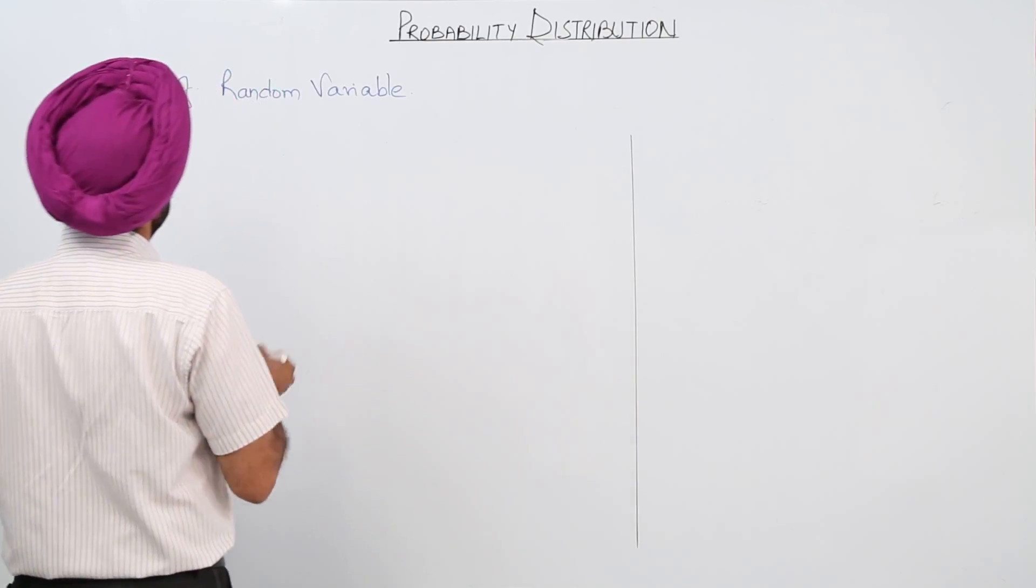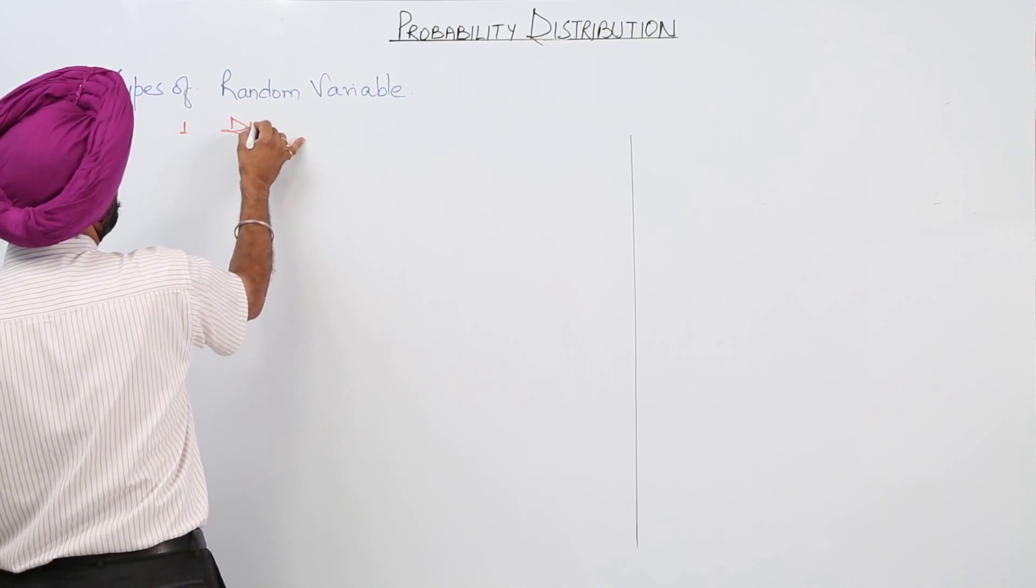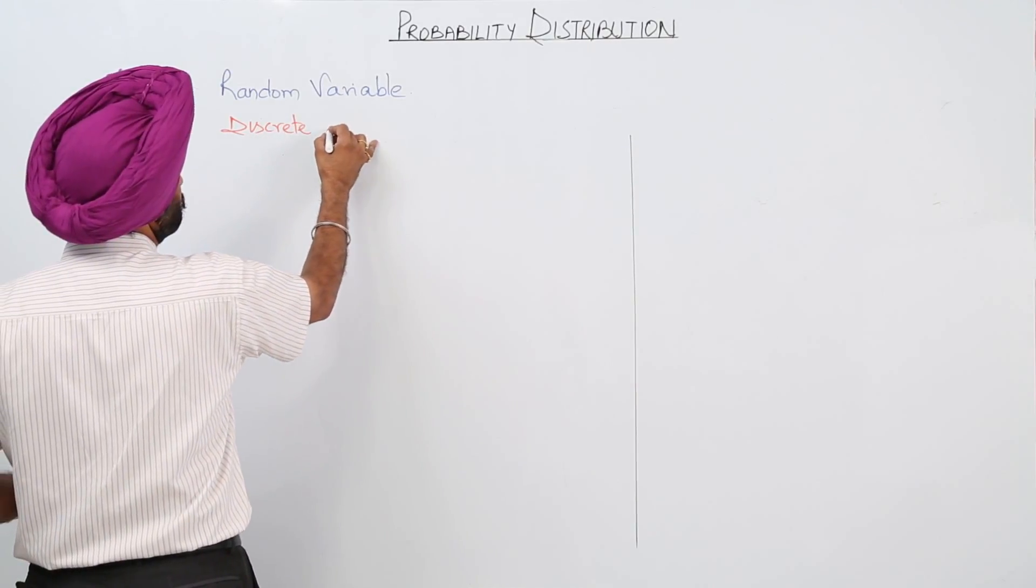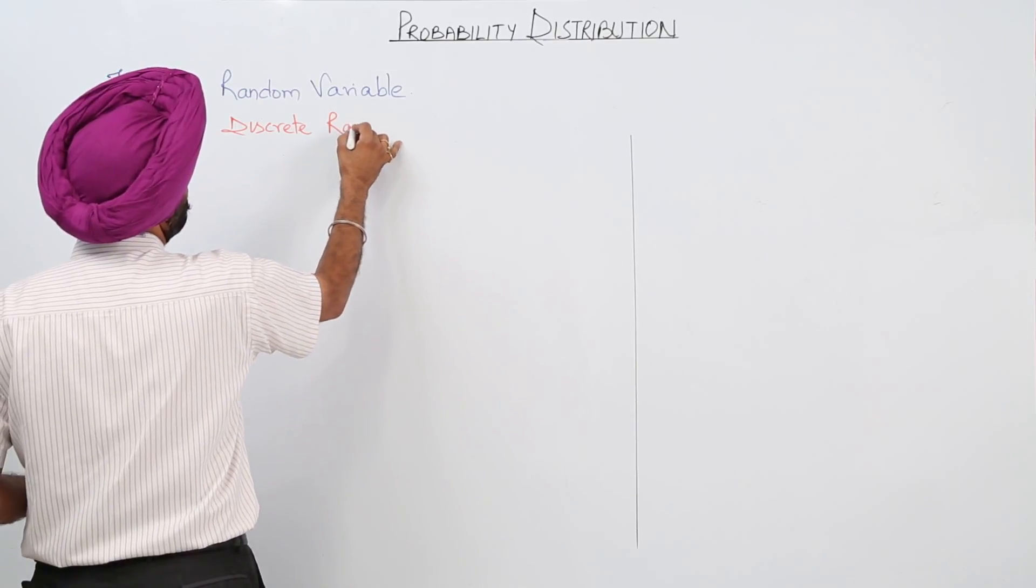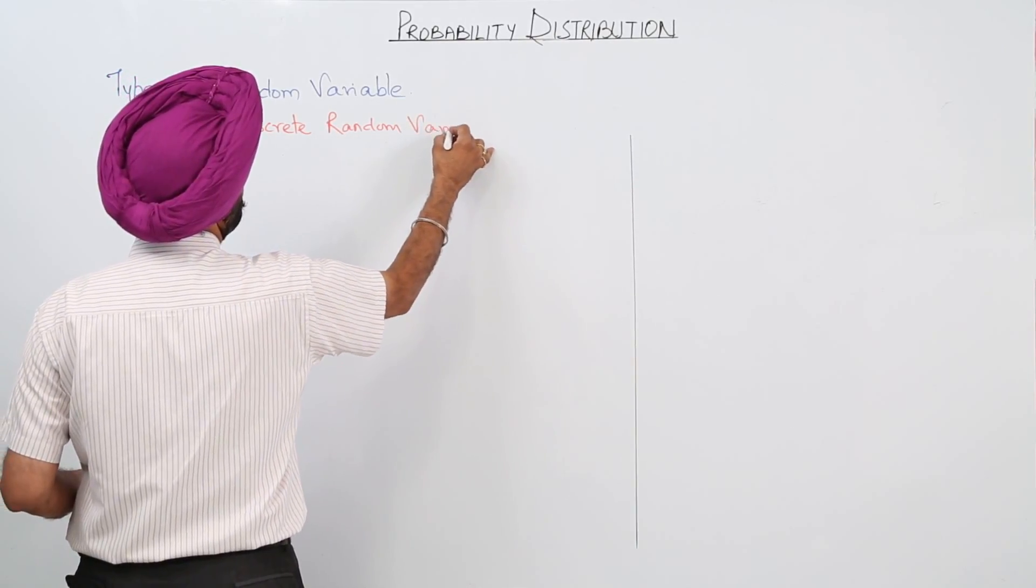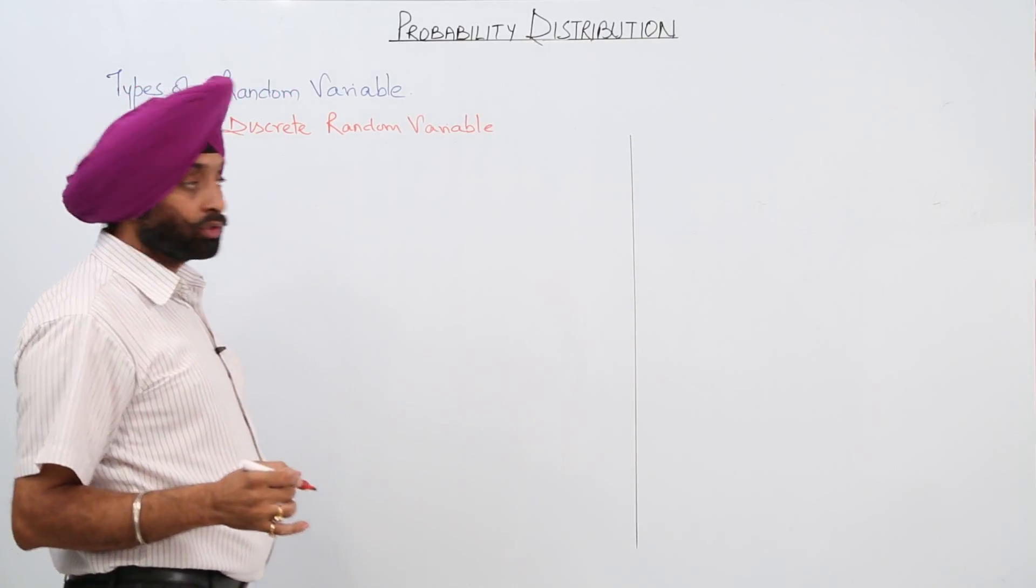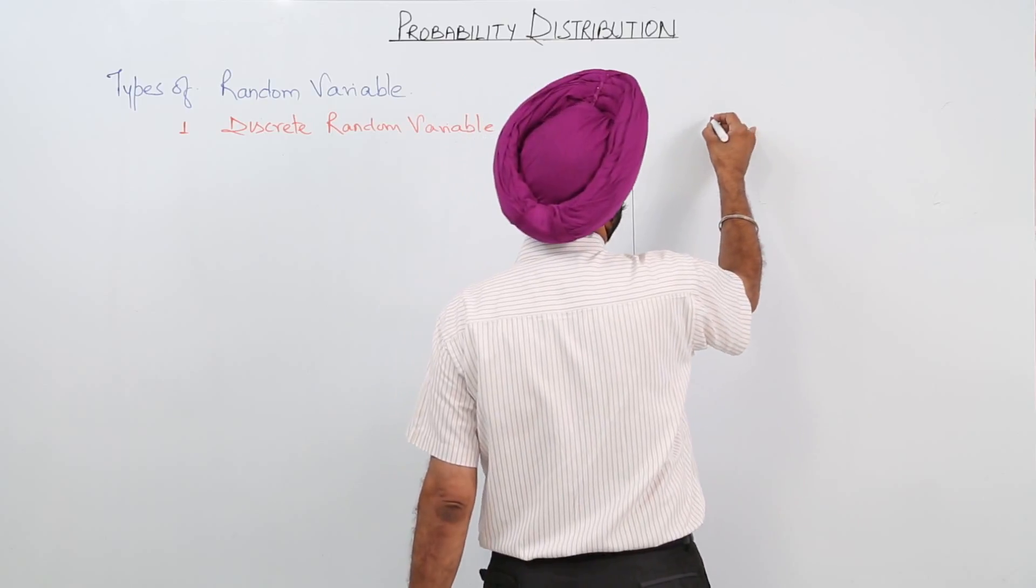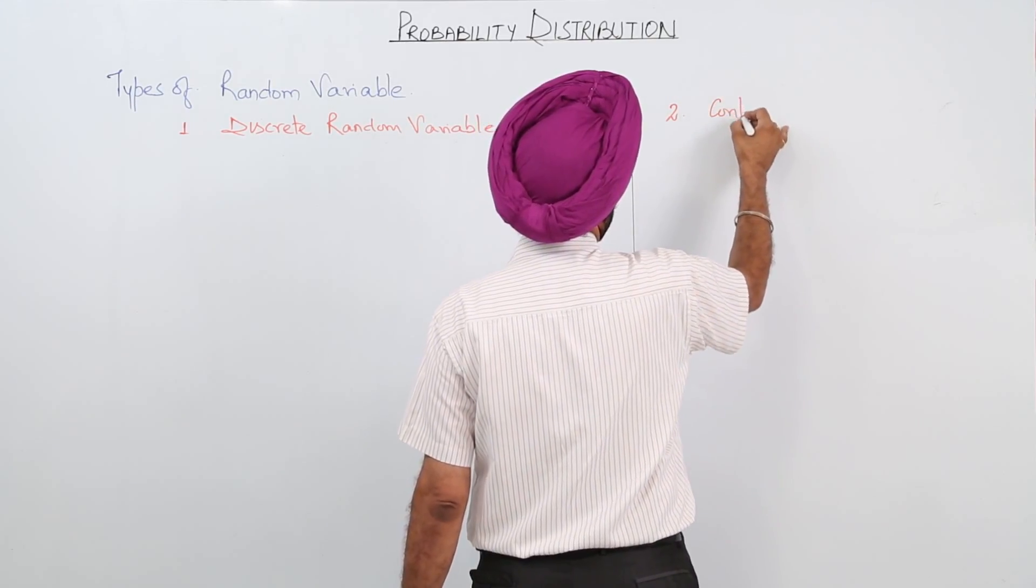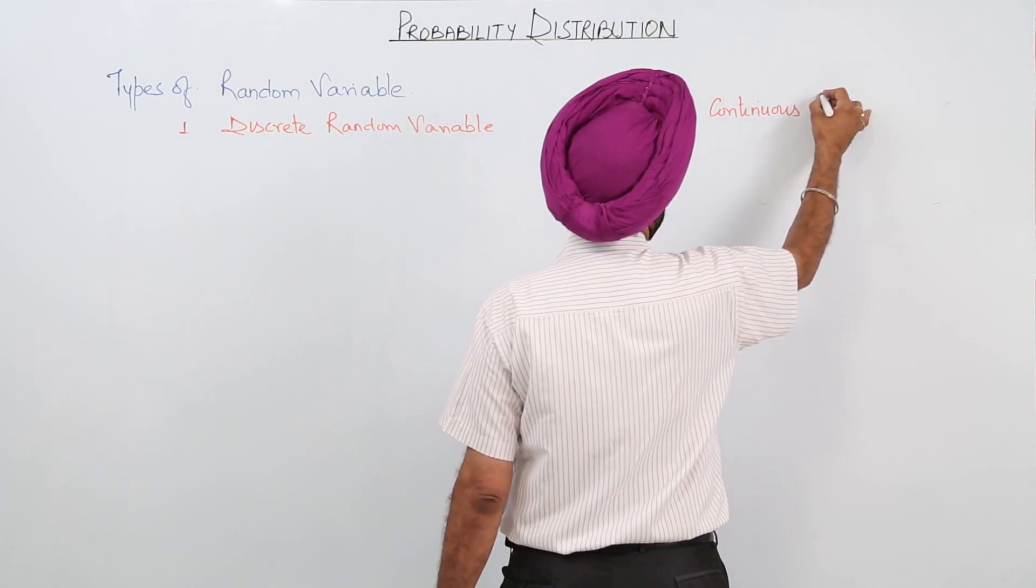Number one is discrete random variable, and number two is continuous random variable.